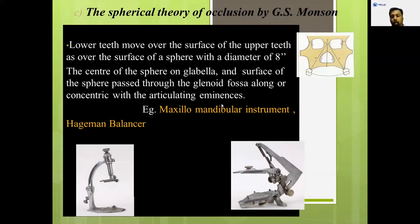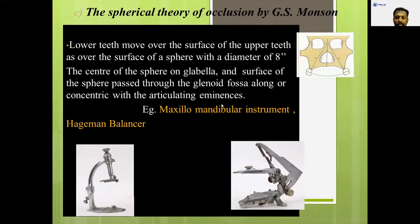The spherical theory was put forward by Monson. Instead of a cone, here it was a sphere with the centre at the glabella. The lower teeth move over the upper teeth in such a way that movement occurs over the surface of a sphere with a diameter of 8 inches, with the centre at the glabella. Spherical theory by Monson, conical theory by Hall, and equilateral triangle theory by Bonwill.